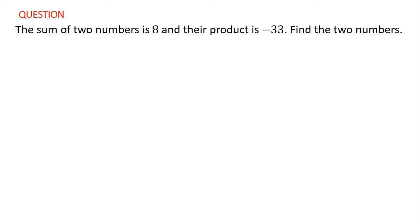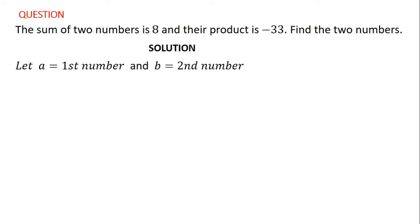So what do we do? We are going to represent those two unknown numbers by variables. I will say that a is equal to the first number and b is equal to the second number. After you've used variables to represent the unknowns, you now use these variables to write the equations for the question.